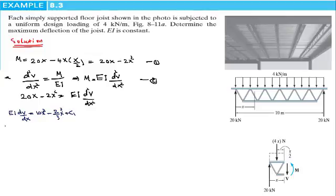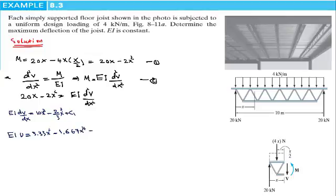Integrating a second time, we have EI multiplied by v equals 10/3, that is 3.33, x cubed, minus 2/3 times 1/4, that is 0.1667, x to the power 4, plus C1·x, plus C2.